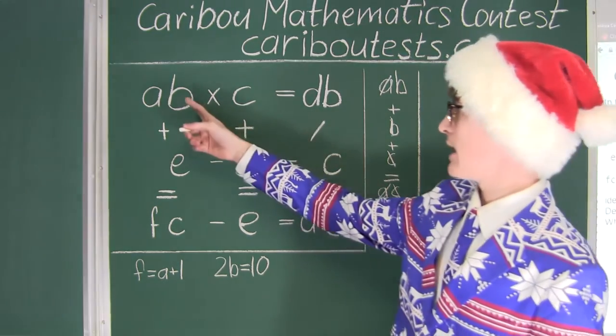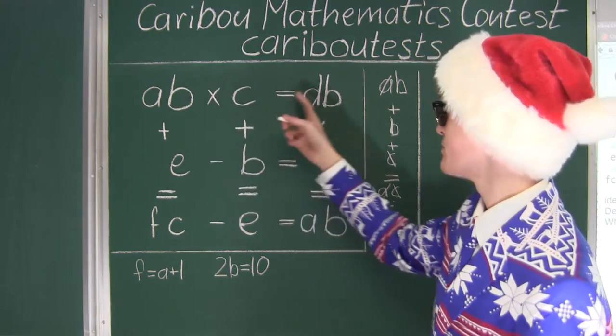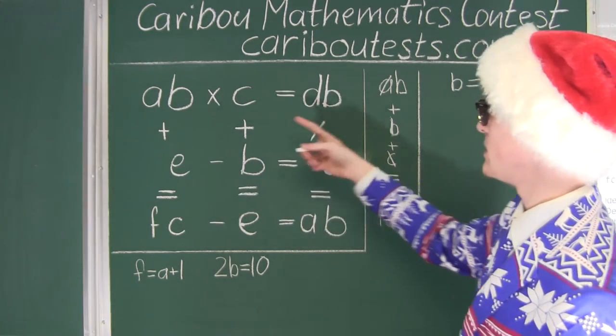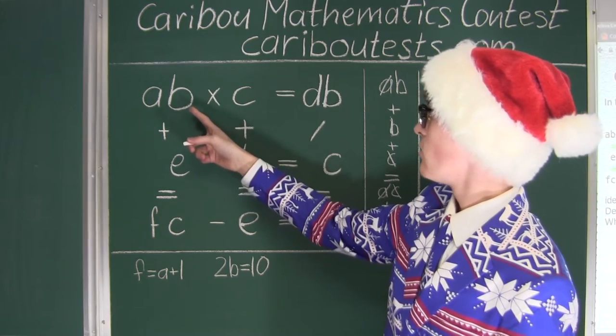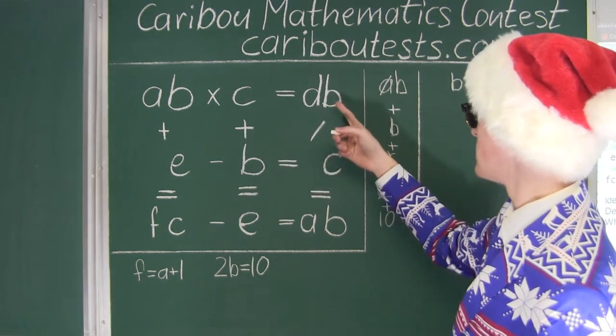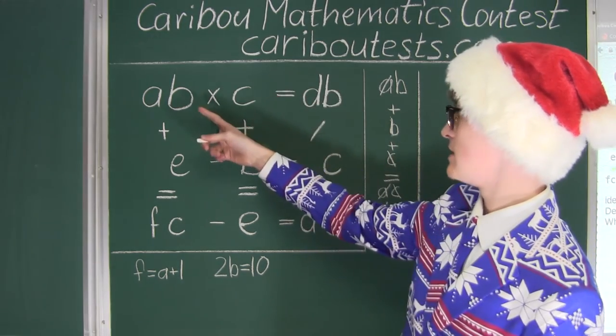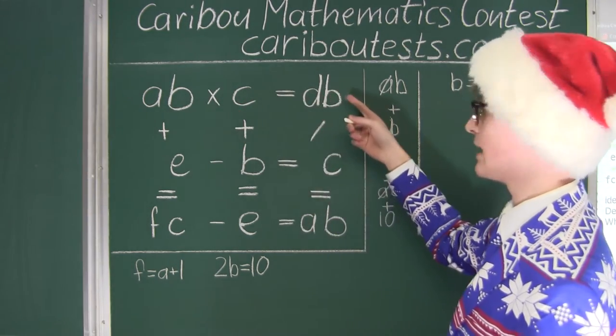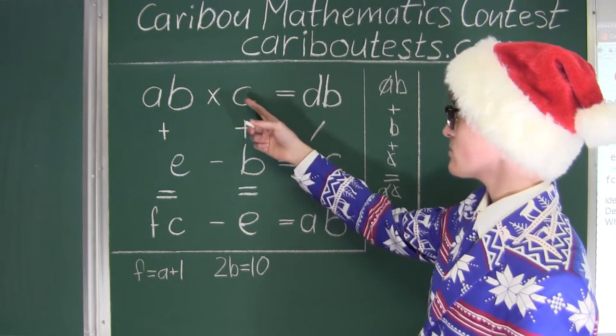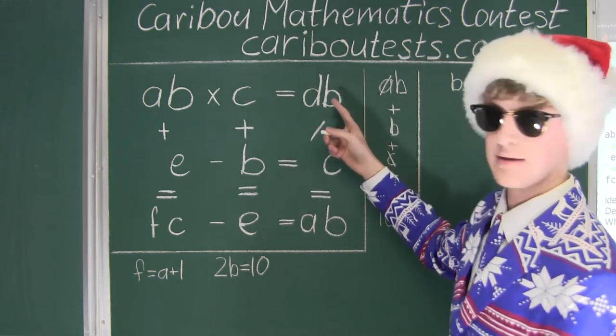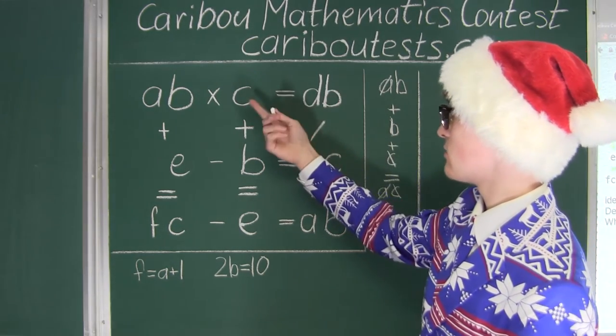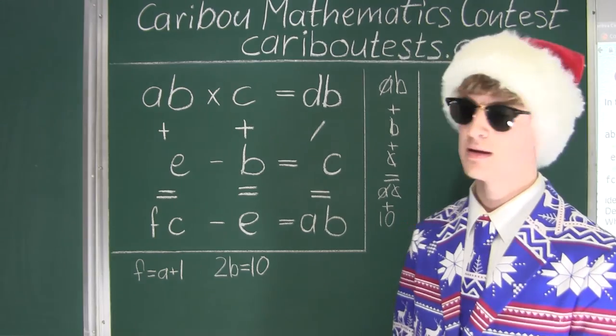Now let's look at the top row. AB times C is equal to DB. And we know that B is five. Well, we have five times C is equal to, and then it ends in B, which is five. So five times C then ends in five. Now if C were even, if it was an even number, well then this would end in zero. But we know that it ends in five. So that means that we know C must be an odd number.